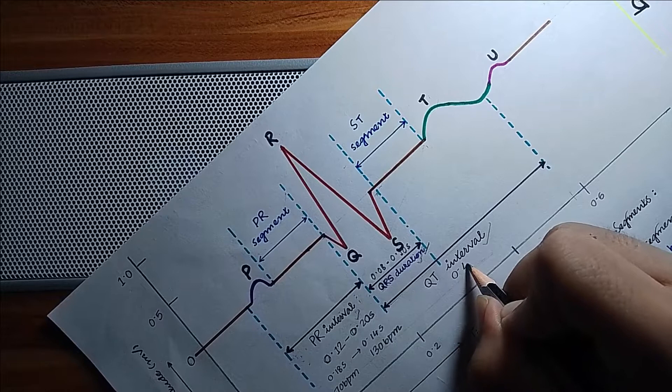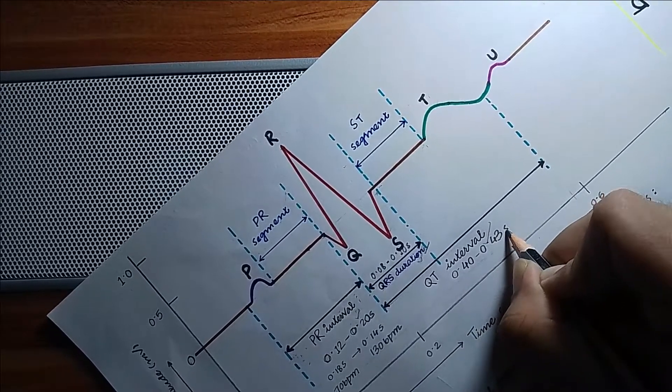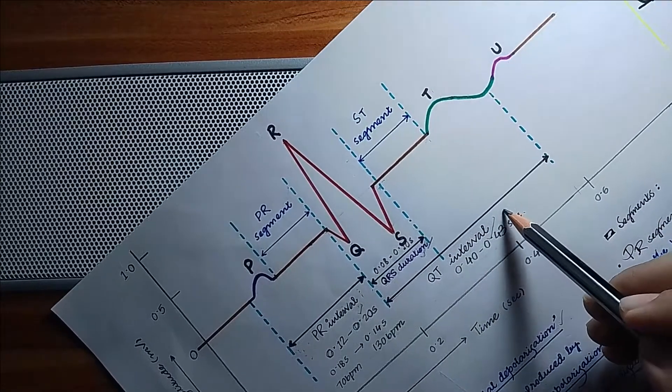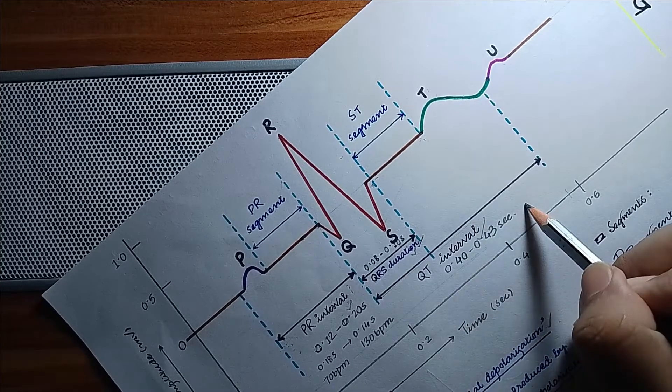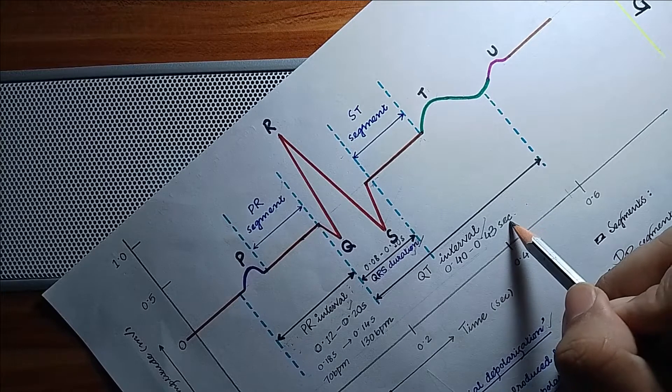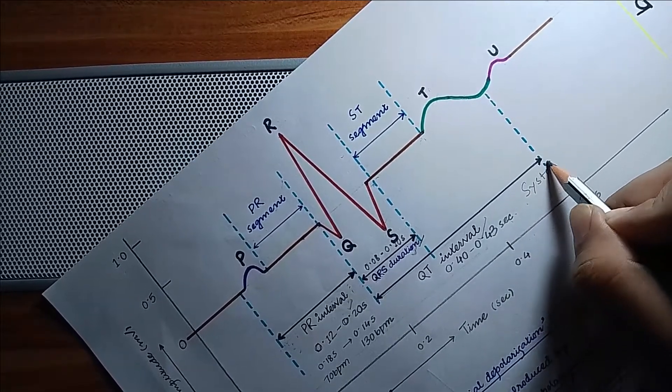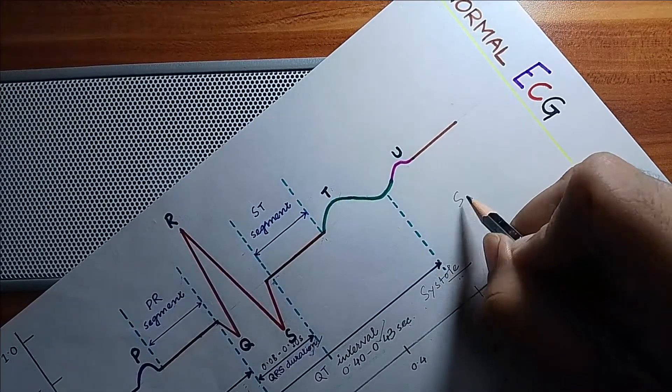The significance of this QT interval is it represents ventricular depolarization and repolarization. It corresponds to the duration of electrical systole. Other than that, there is ST, PP, and RR interval.